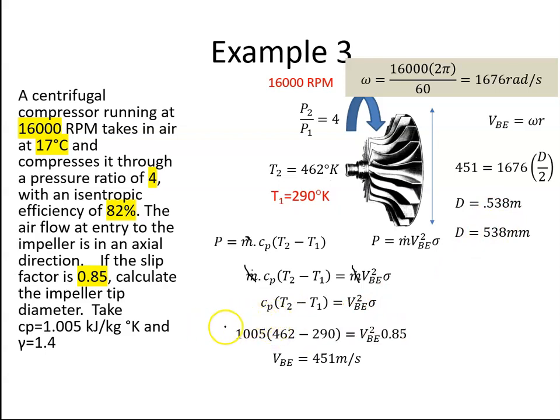Cp is 1005, T2 is 462, T1 is 290, that's equal to VBE squared times 0.85, that's our slip. And from that we get VBE is equal to 451 meters per second.